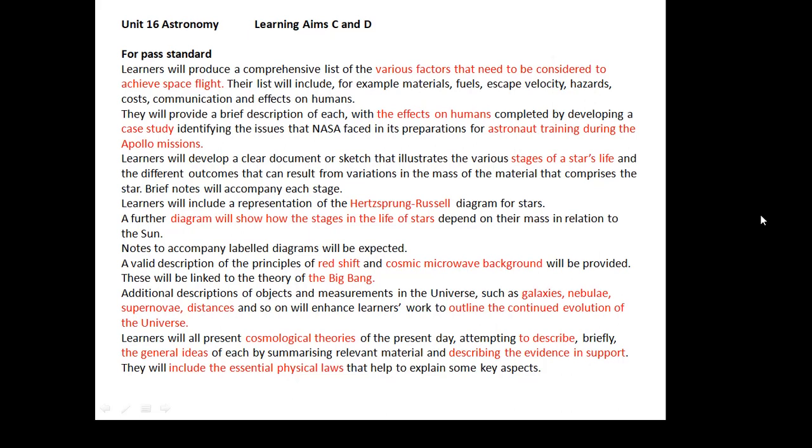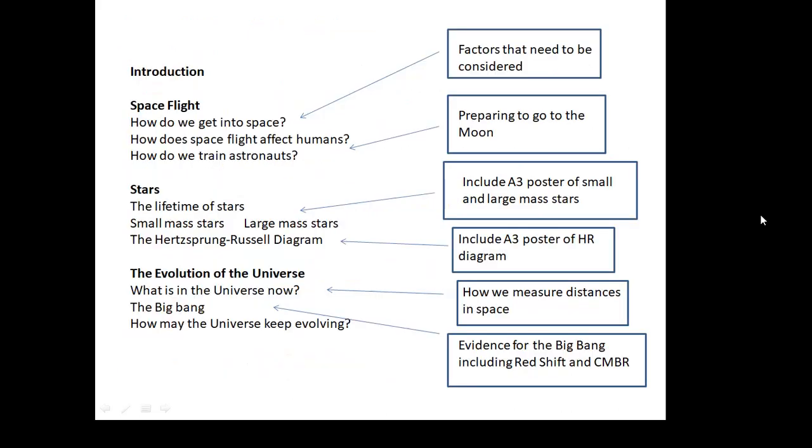After thinking about it for some time, I've decided that I'm going to have three main sections. The first one on space flight, the second one about stars, and the third one about the evolution of the universe. And then within each big section, I'll have some smaller sections. And within these, I reckon I can include all of the information that I'm supposed to.